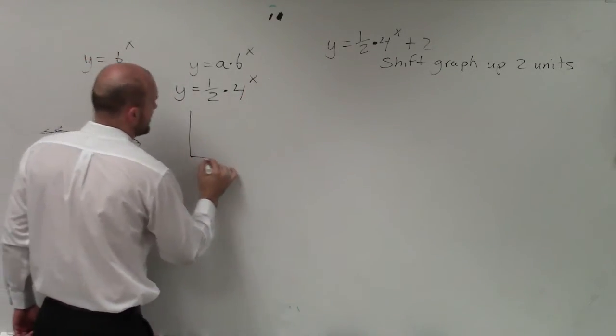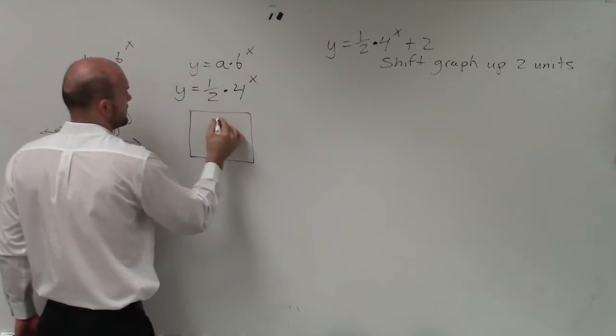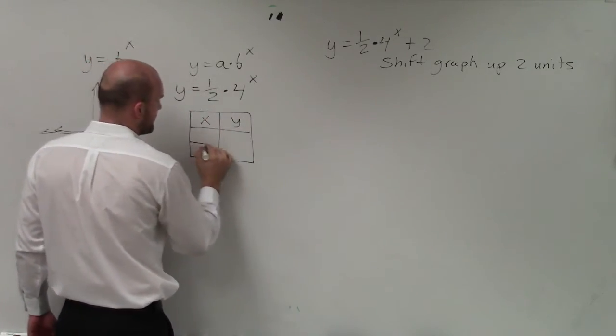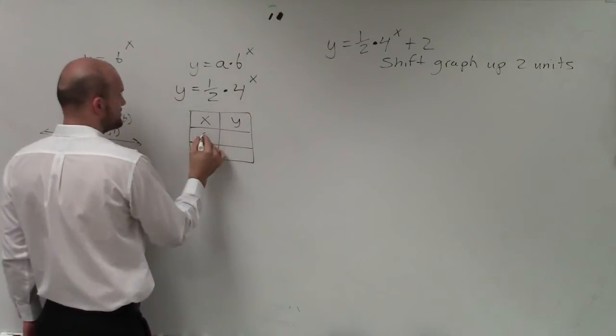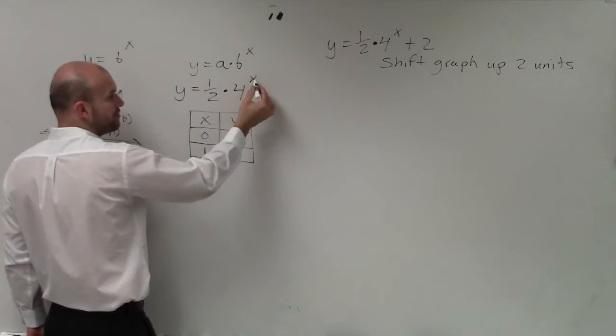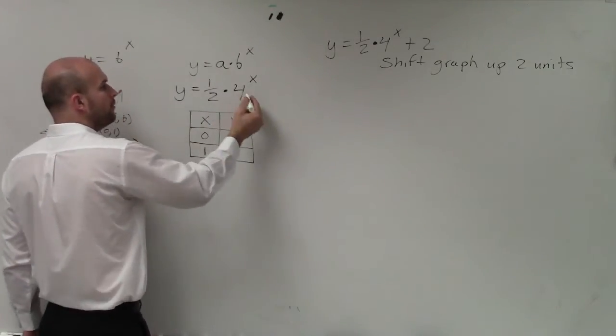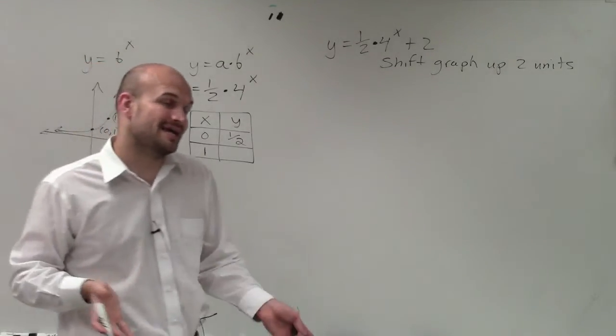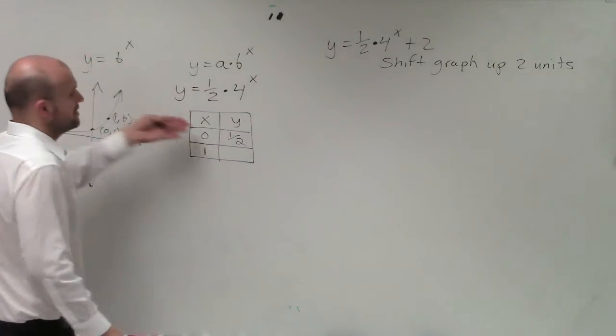So by creating my table here, I have an x and a y-coordinate. And I'm just simply going to plug in the points for 0 and 1. Now, when I plug 0 into this equation, 4 raised to the 0 power is 1. But 1 times 1 half is just 1 half. So you can see that now my y-intercept has changed from 1 down to 1 half.